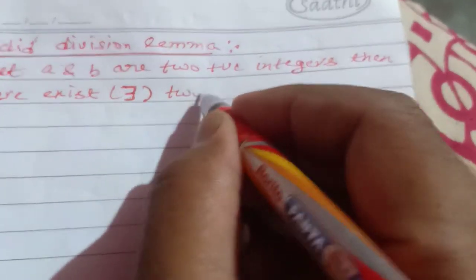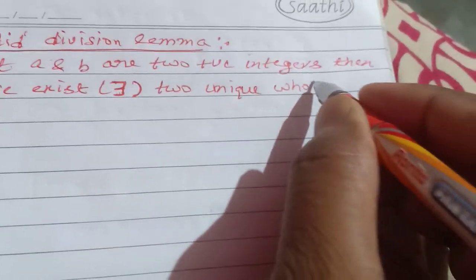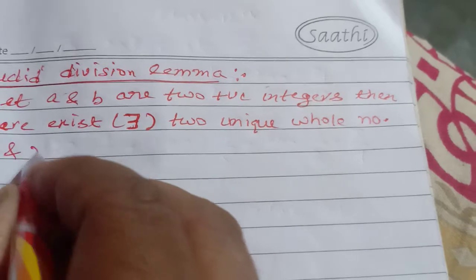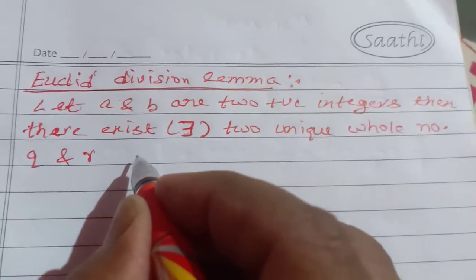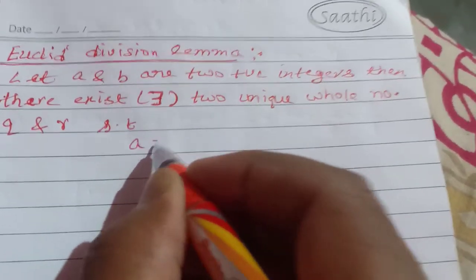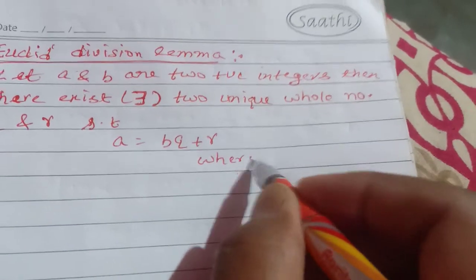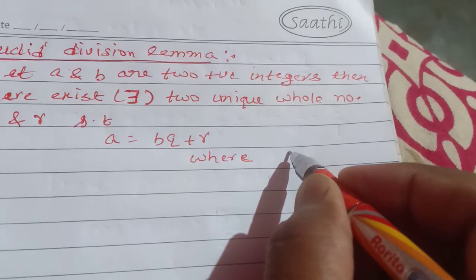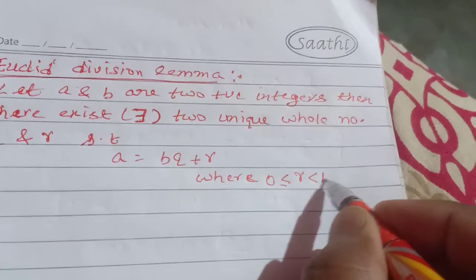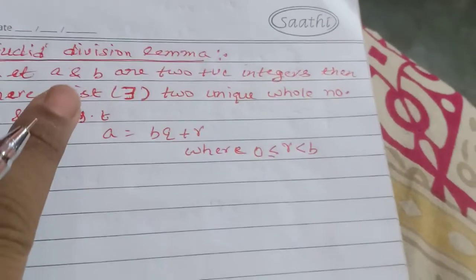...such that A is equal to BQ plus R, where R is greater than or equal to 0 but less than B. That is called Euclid's Division Lemma.